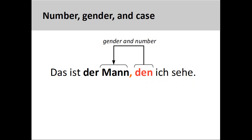In German, the relative pronoun introducing the relative clause is influenced by two things. First, the gender and number of the pronoun is influenced by the antecedent in the main clause. In the sentence "das ist der Mann, den ich sehe" (that is the man whom I see), the relative pronoun "den" refers back to the antecedent "der Mann" in the main clause and agrees with this noun in both gender and number. That is to say, the relative pronoun is both masculine and singular.